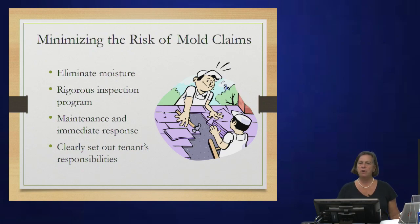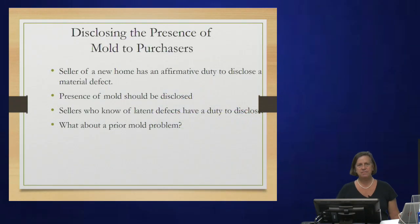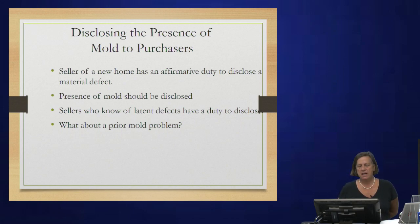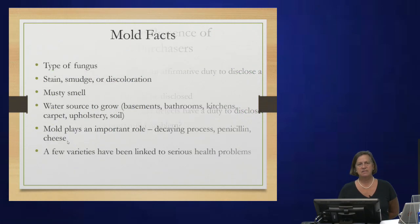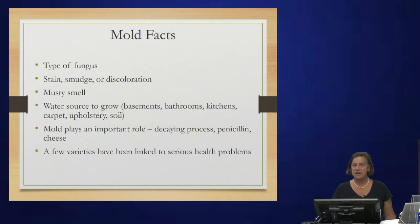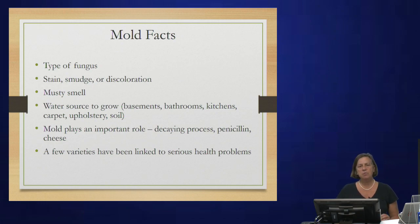Minimizing the risk of mold claims: number one on the list is eliminate moisture. Always disclose — never try to hide the presence of mold to purchasers. Sellers who know of hidden defects have the duty to disclose. If there's a prior mold problem, remediate and disclose. Here are some fun facts: mold is a type of fungus. It can appear as a stain, smudge, discoloration, or a musty smell. It needs a water source to grow — without a water source it cannot grow.